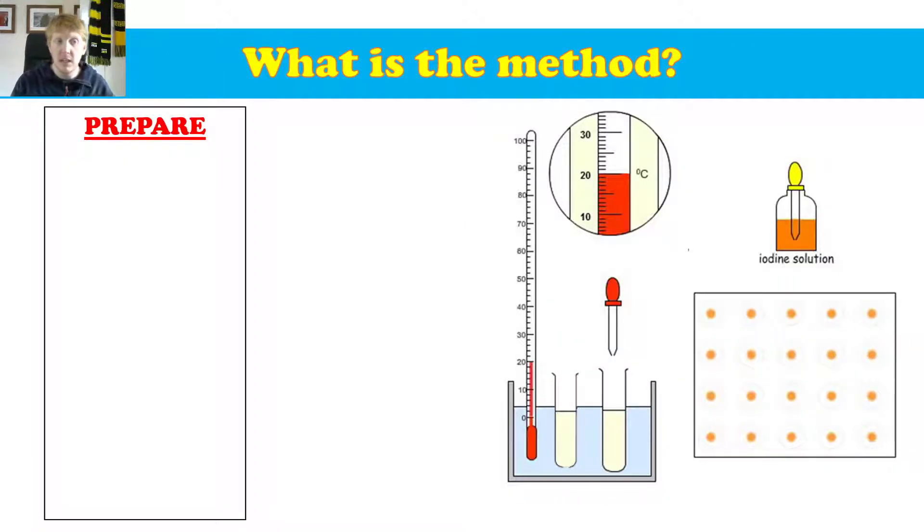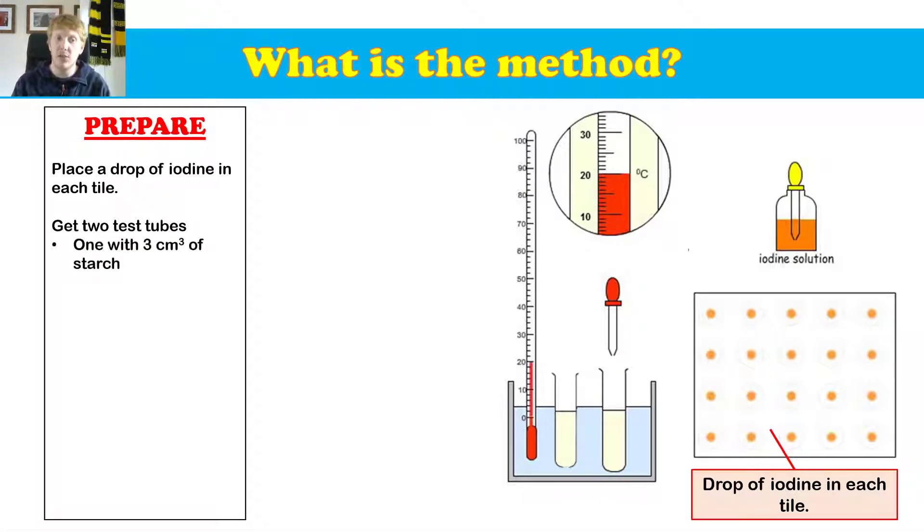So let's run through the method. Let's do the preparation phase first. So we're going to place a drop of iodine in each tile. As you can see on the right here, you can see my tiles, and we're going to put a single drop of iodine in each of those tiles.